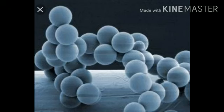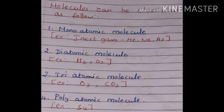A molecule can be formed by the same or different kinds of atoms. Let's see the classification of molecules. A molecule which contains only one atom is called a monatomic molecule. Examples are inert gases like helium, neon, and argon.